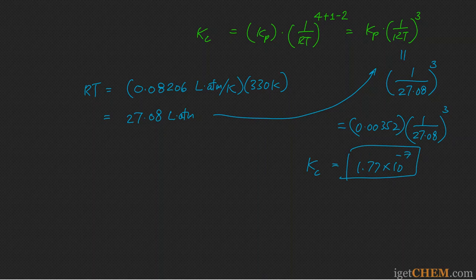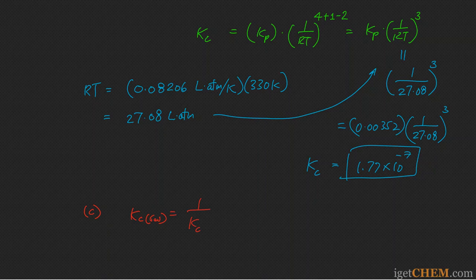For Part C, we need the equilibrium constant for the reverse reaction. The Kc for the reverse reaction is simply the reciprocal of the Kc for the forward reaction. Since the forward reaction has Kc = 1.77 × 10⁻⁷, the Kc for the reverse reaction is 1 / (1.77 × 10⁻⁷) = 5.64 × 10⁶.